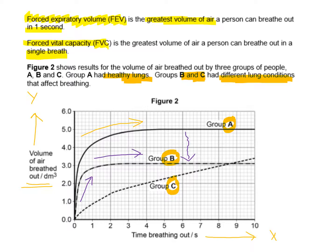Group C shows a shallower curve initially — a smaller volume of air expired over time. However, the volume of air expired in Group C eventually rises above the maximum plateau of Group B. This suggests the lung capacity of people in Group C may not be reduced, but there's likely a blockage or narrowing of the bronchioles making it harder for them to expire air.